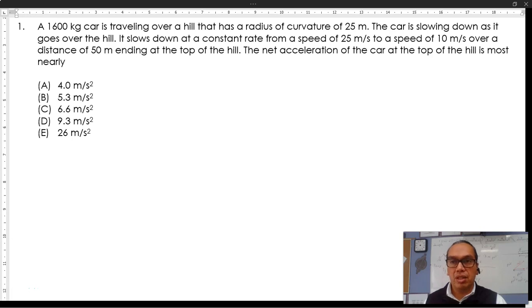Number one: A 1600 kilogram car is traveling over a hill that has a radius of curvature of 25 meters. The car is slowing down as it goes over the hill. It slows down at a constant rate from a speed of 25 meters per second to a speed of 10 meters per second over a distance of 50 meters, ending at the top of the hill. The net acceleration of the car at the top of the hill is most nearly: